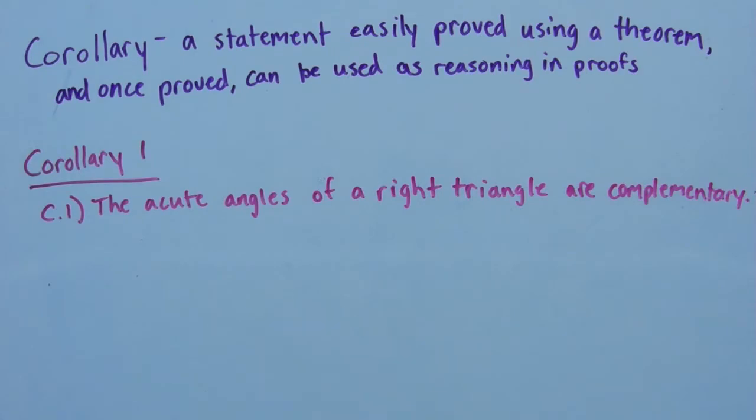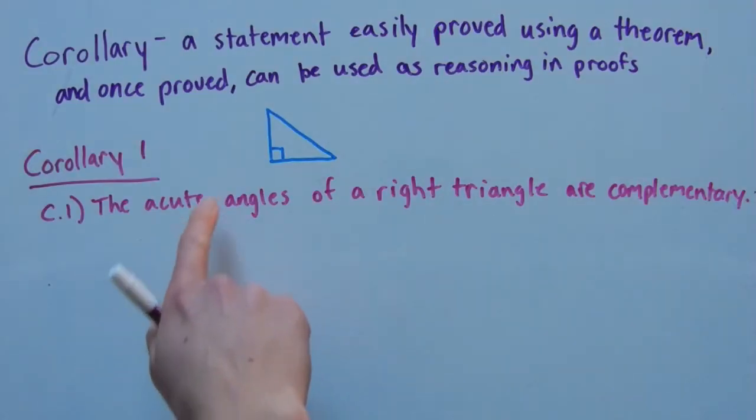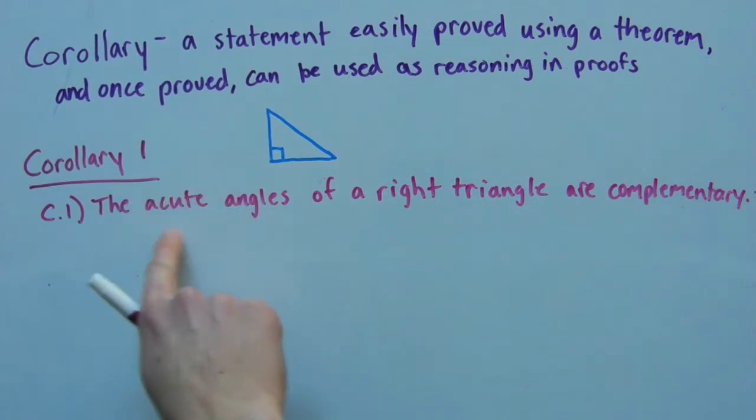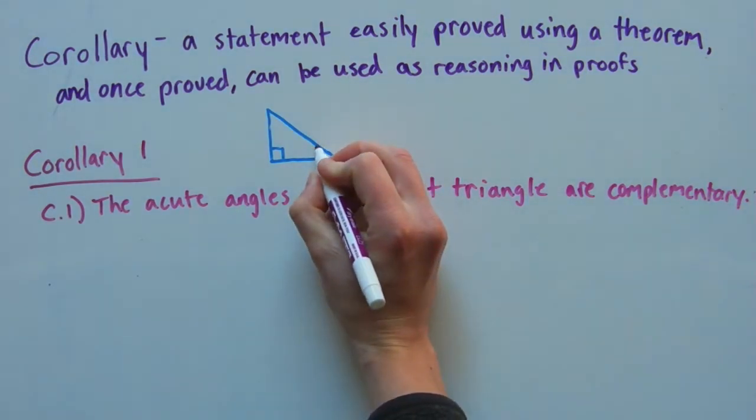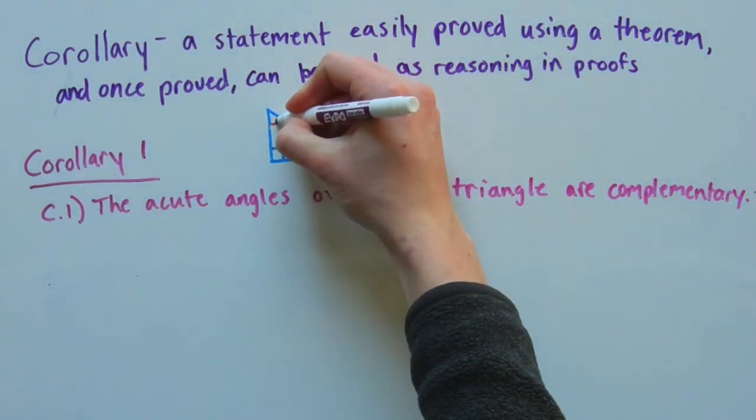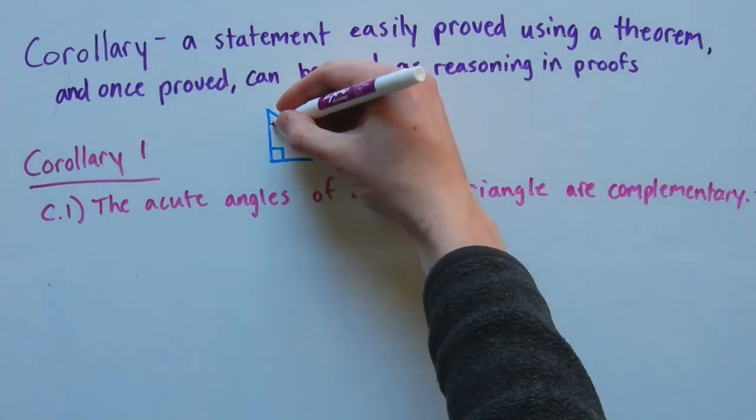Let's illustrate that in a picture. Here is a right triangle. The corollary says that the acute angles of a right triangle are complementary. So this angle plus this angle should equal 90 degrees.